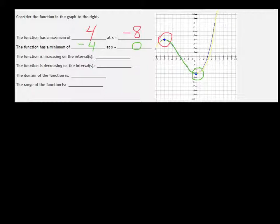So it's increasing on two intervals and those are from negative infinity to the point negative 8, and then union, that's increasing again from 0 to infinity.